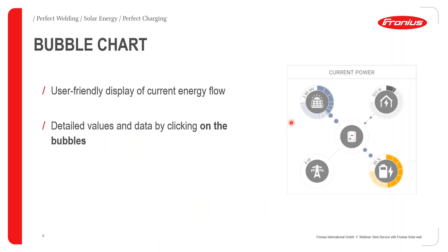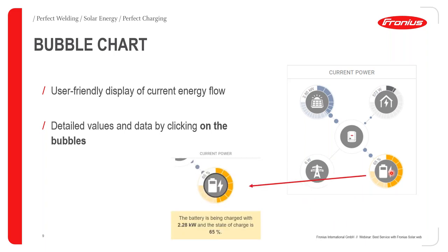The bubble chart is a very interesting feature in Fronius SolarWeb. It provides an in-depth view of what's happening in the system — power generated from the PV system, power consumed at the load point, state of charge of the battery, and grid status. Clicking on any bubble gives detailed data; for example, clicking the battery icon shows the state of charge at 65% and charging power of 2.28 kW.